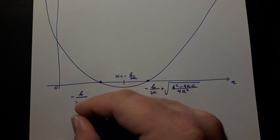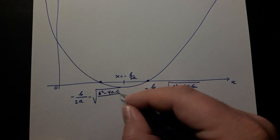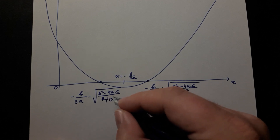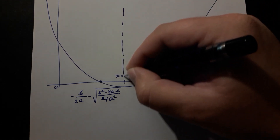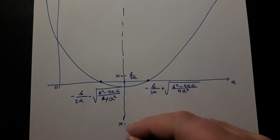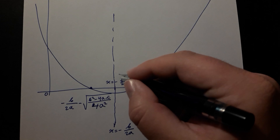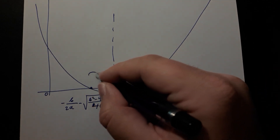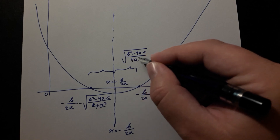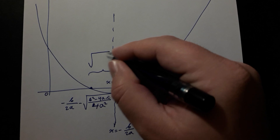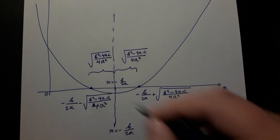If we take the point x equal to negative b over 2a and then either add or subtract the square root of (b squared minus 4ac) divided by 4a squared, we will always end up at a root. This tells us that x equal to negative b over 2a is the line of symmetry. The distance from the line of symmetry to each root is the square root of (b squared minus 4ac) divided by 4a squared.